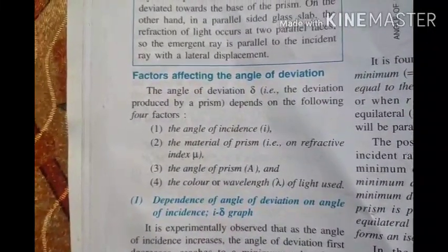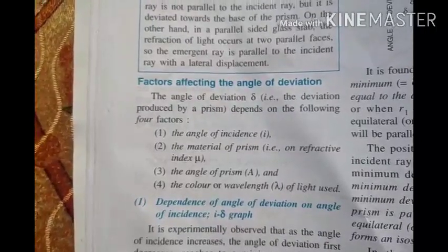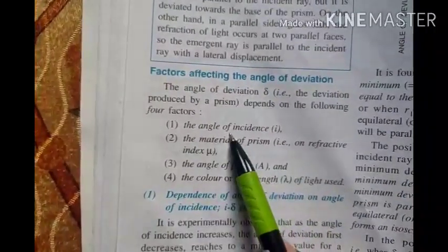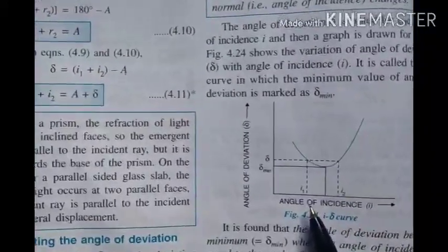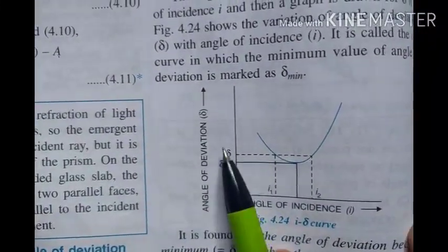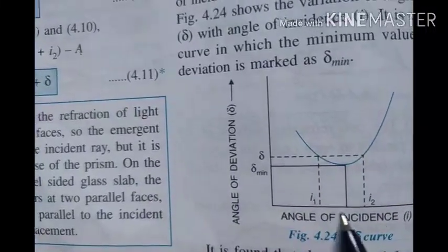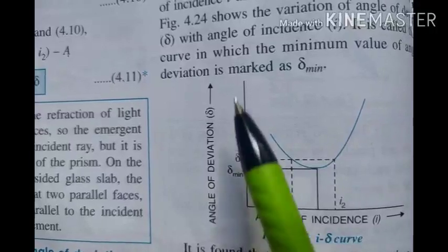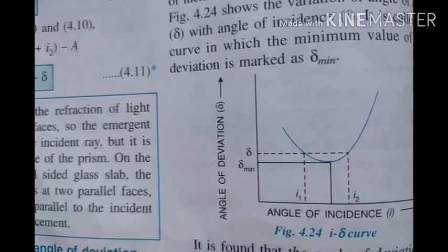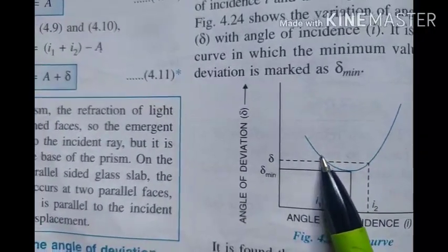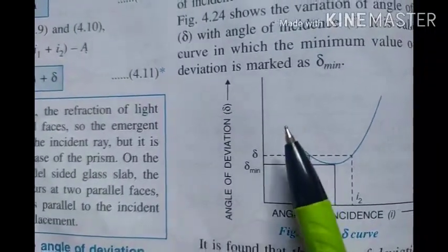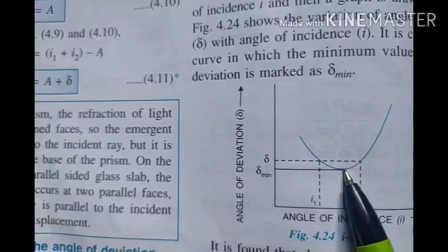I'm going to teach you the factors which affect the angle of deviation. There are three factors. The first is the angle of incidence. To see how the angle of deviation changes with the angle of incidence, look at this graph — angle of deviation along the y-axis and angle of incidence along the x-axis. As the angle of incidence increases, the angle of deviation decreases, and it becomes minimum at a certain point.